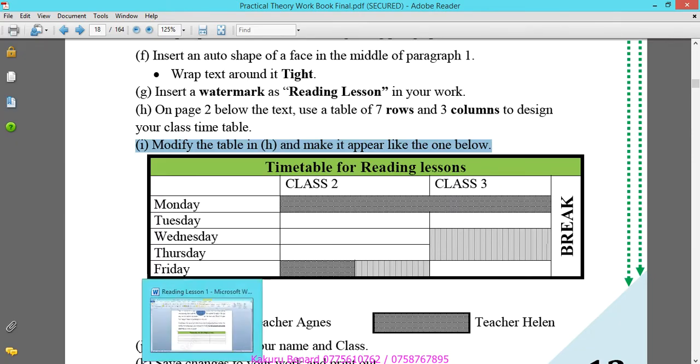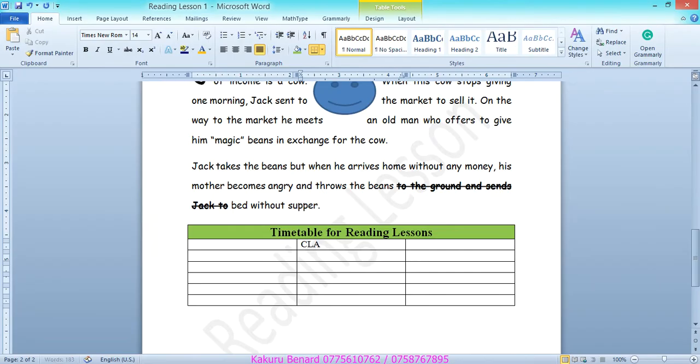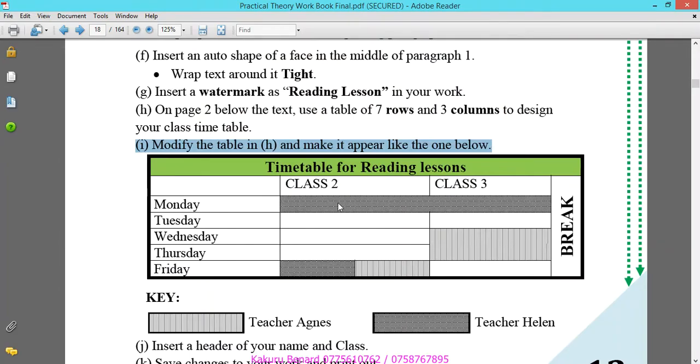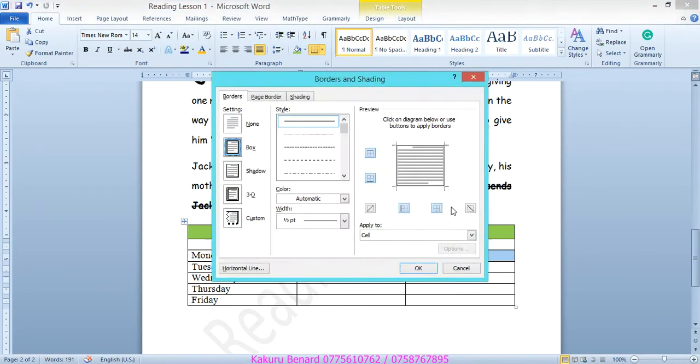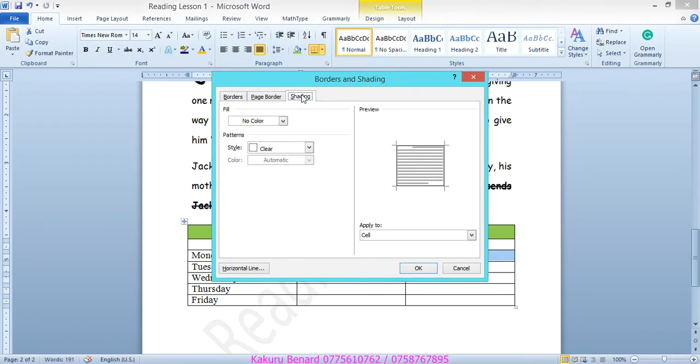Below we have class 2, class 3. Here we have days of the week: Monday, Tuesday, Wednesday, Thursday, Friday. Then after we have these patterns. You highlight these two cells, right click merge cells. Borders and shading, come to the shading tab. Under patterns click down arrow, scroll down up to decay grid, click there and click OK.